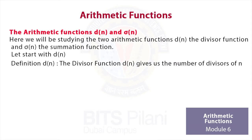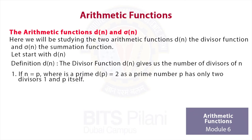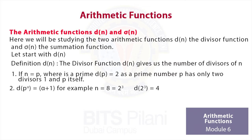What if n is p to the power α? Then d(p^α) will be α + 1. For example, if we take n to be 8, then 8 can be written as 2 to the power 3, and d(2^3) using the formula will be 4.